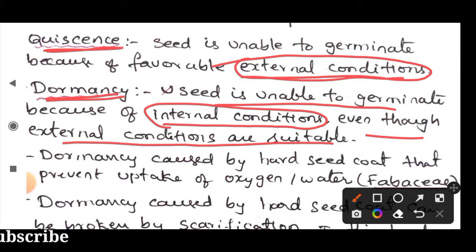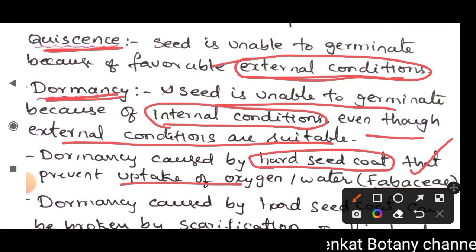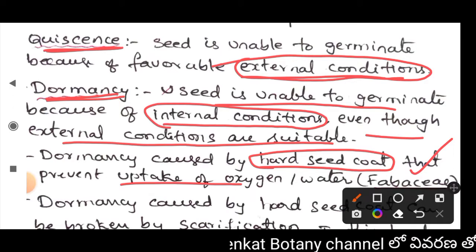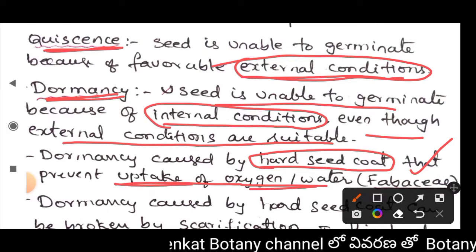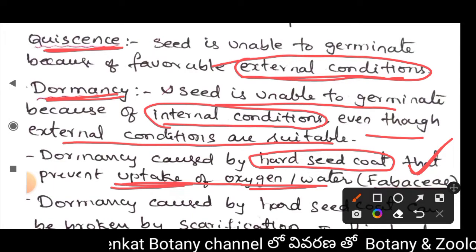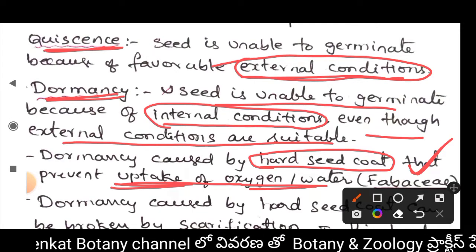Dormancy can be caused by a hard seed coat — this is very important. A hard seed coat prevents the uptake of oxygen or water. In plants belonging to the Fabaceae family, dormancy is caused by a hard seed coat that prevents uptake of oxygen or water.